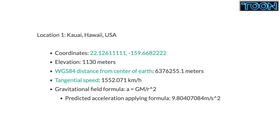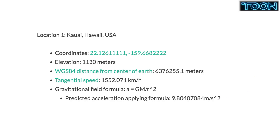We can plug in the values to the first equation, and we get a value of 9.80407084 meters per second squared. This is the predicted downward acceleration due to just the mass of the Earth and the distance from the center.